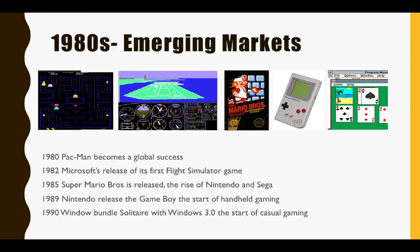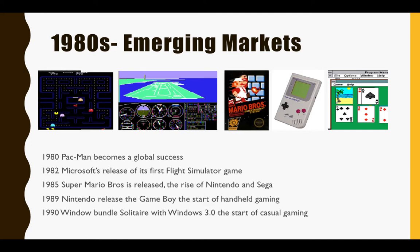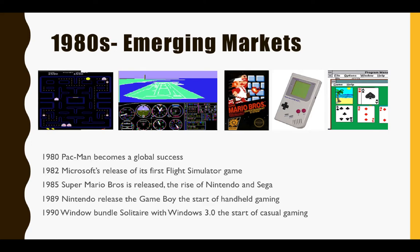Moving into the 1980s, we see new emerging markets and very competitive growth as new companies enter the sector. In 1980, a Japanese game called Pac-Man became a massive hit in America, becoming one of gaming's early global success stories. Across the early 1980s, companies such as Apple, IBM, and others helped to establish the personal computer or PC market, introducing computers into people's homes.